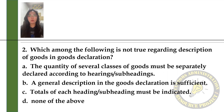Question 2. Which among the following is NOT true regarding description of goods in goods declaration? A. The quantity of several classes of goods must be separately declared according to headings or subheadings. B. A general description in the goods declaration is sufficient. C. Totals of each heading or subheading must be indicated. D. None of the above.